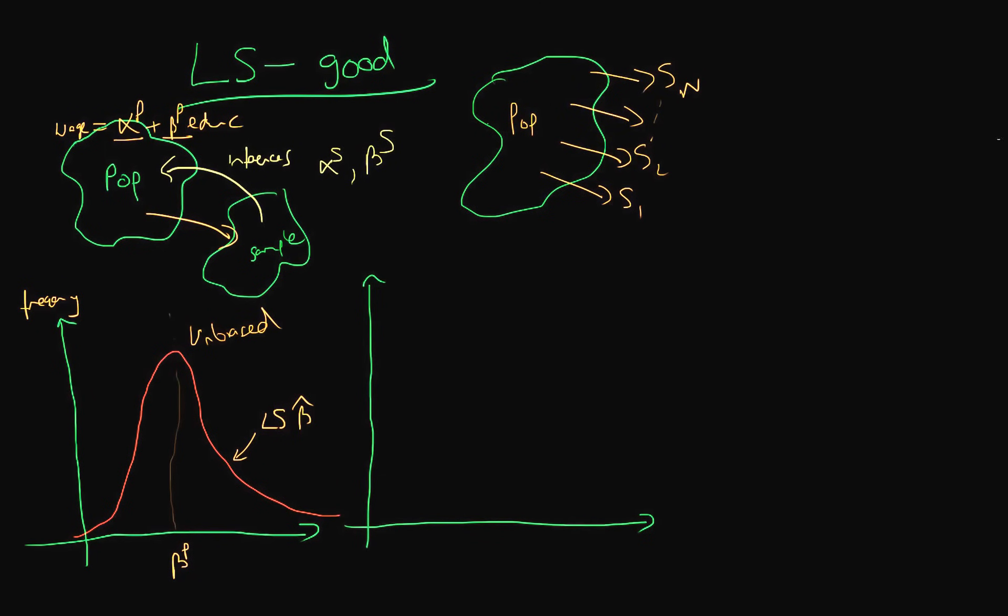Another property which we would like our estimator to have is that basically as I increase my sample size my distribution, my frequency distribution, gets closer and closer to the population value. So in this example the outer frequency distribution could be n equals 100, the inner one might be n equals 1000.